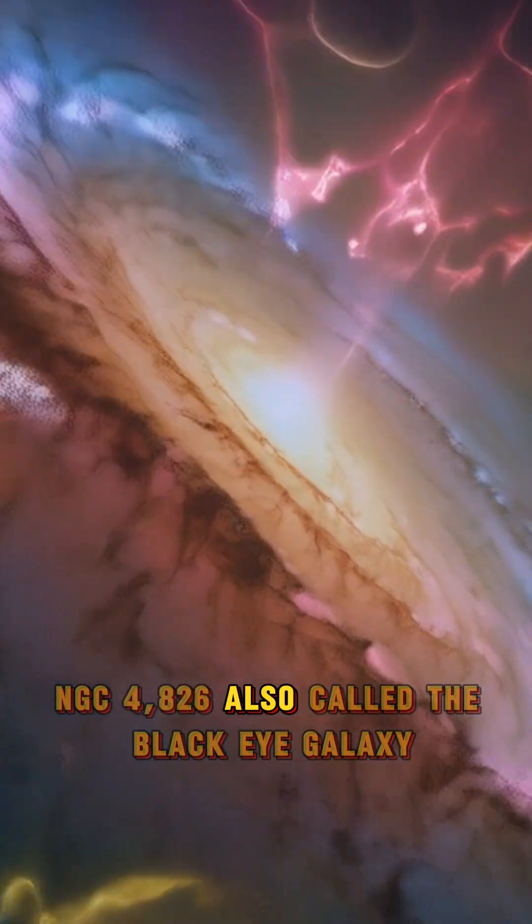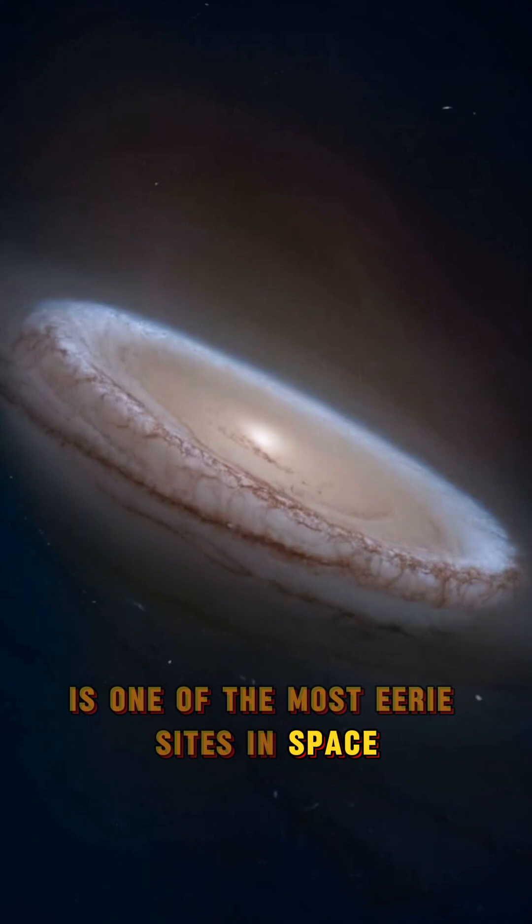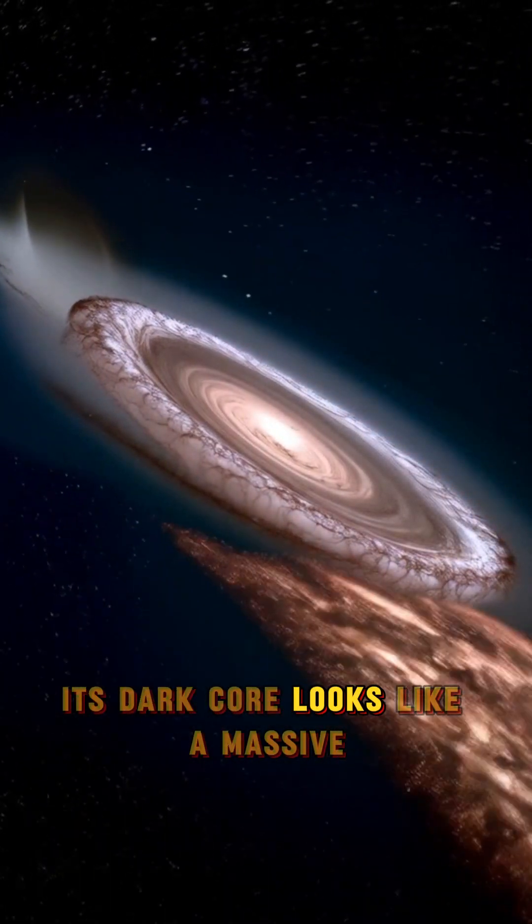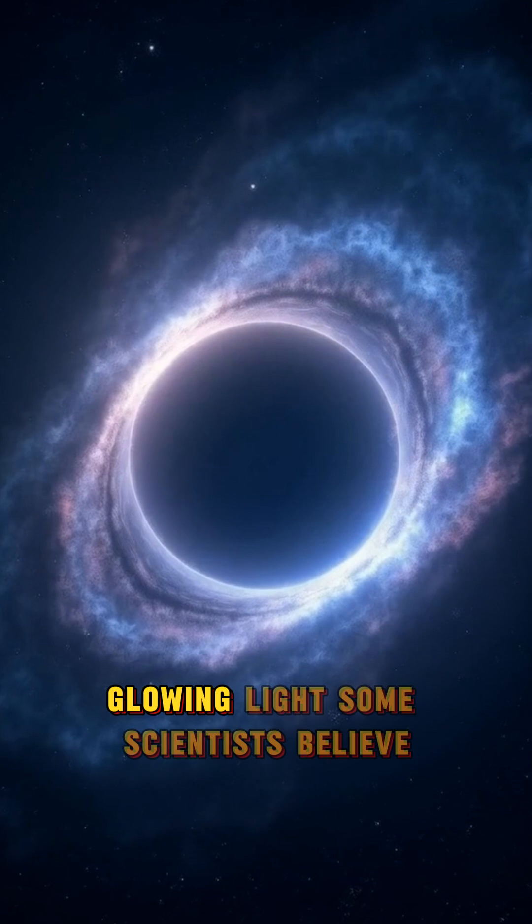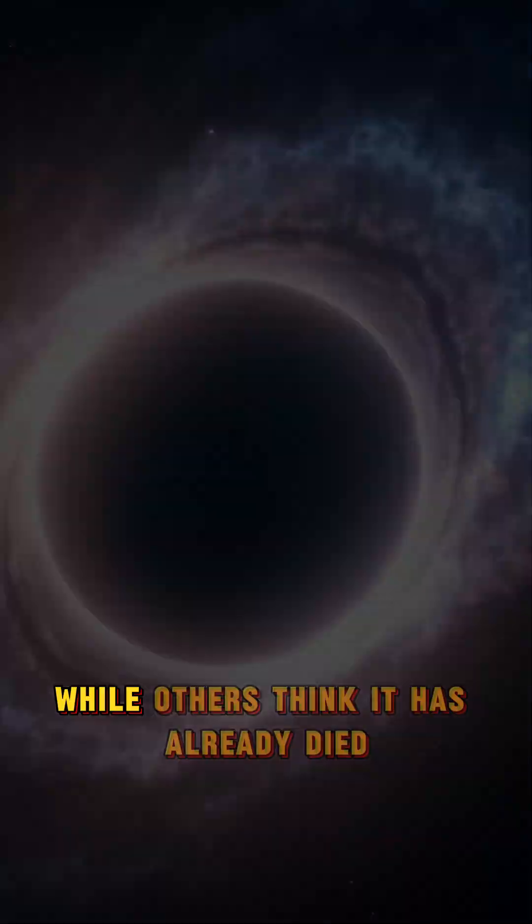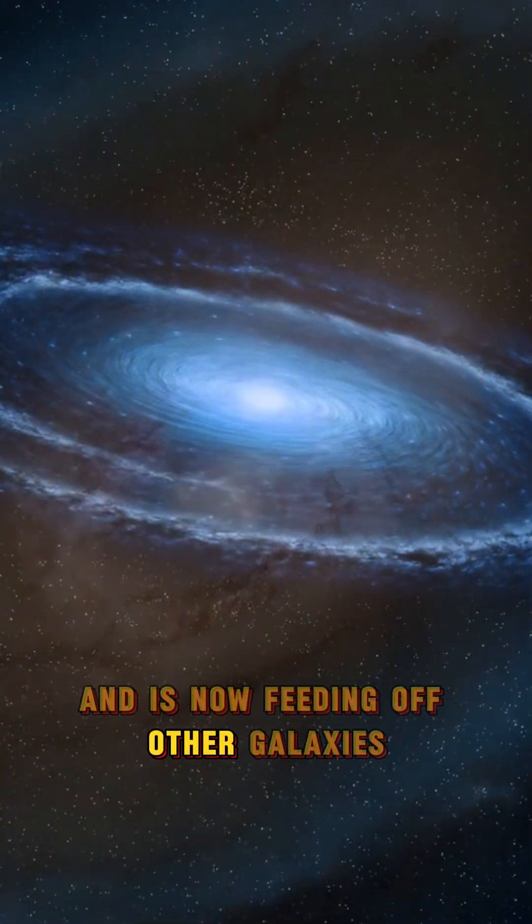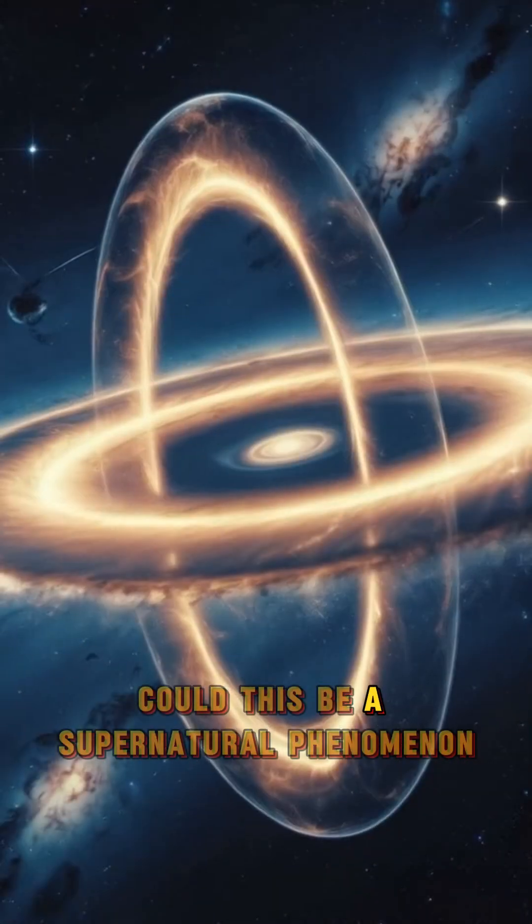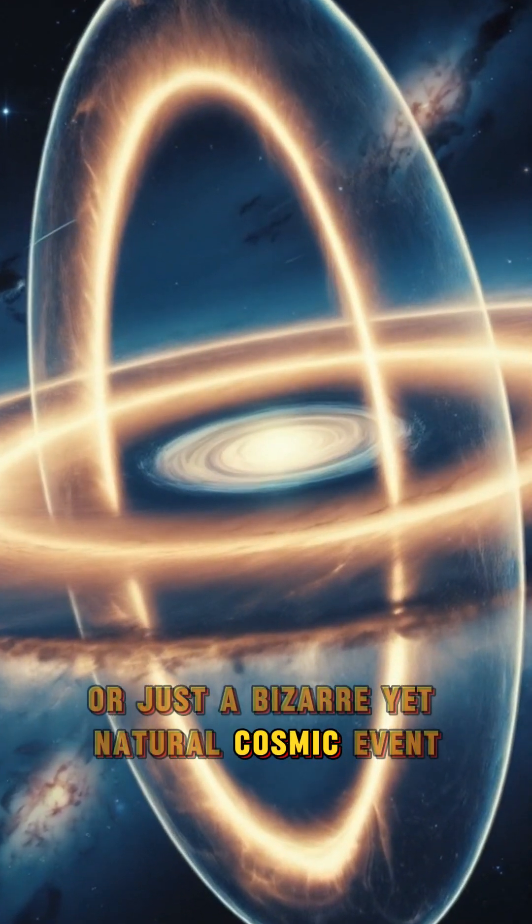NGC 4826, also called the Black Eye Galaxy, is one of the most eerie sights in space. Its dark core looks like a massive, all-seeing eye, surrounded by bright, glowing light. Some scientists believe it is in the process of being reborn, while others think it has already died and is now feeding off other galaxies. Could this be a supernatural phenomenon? Or just a bizarre, yet natural cosmic event?